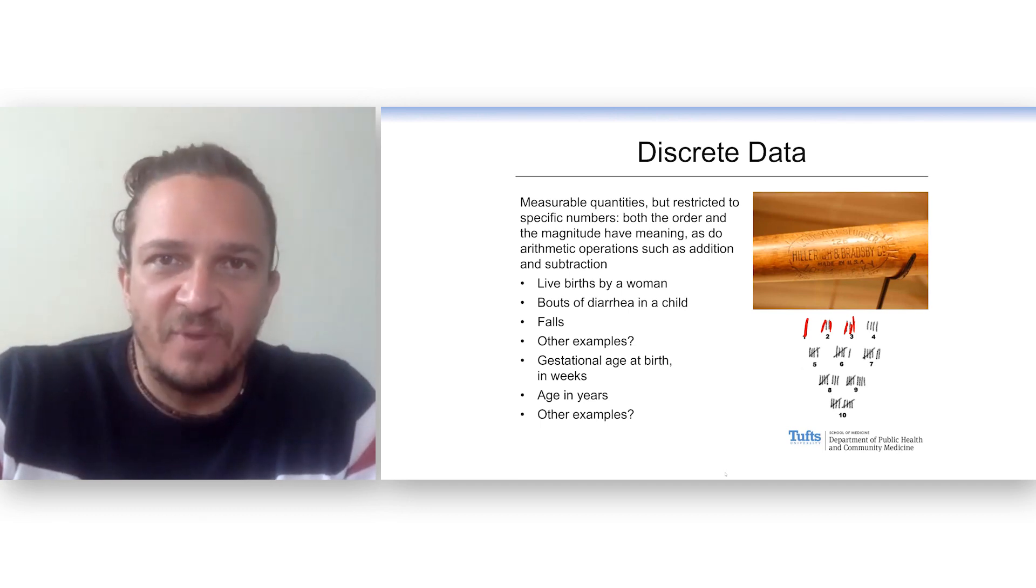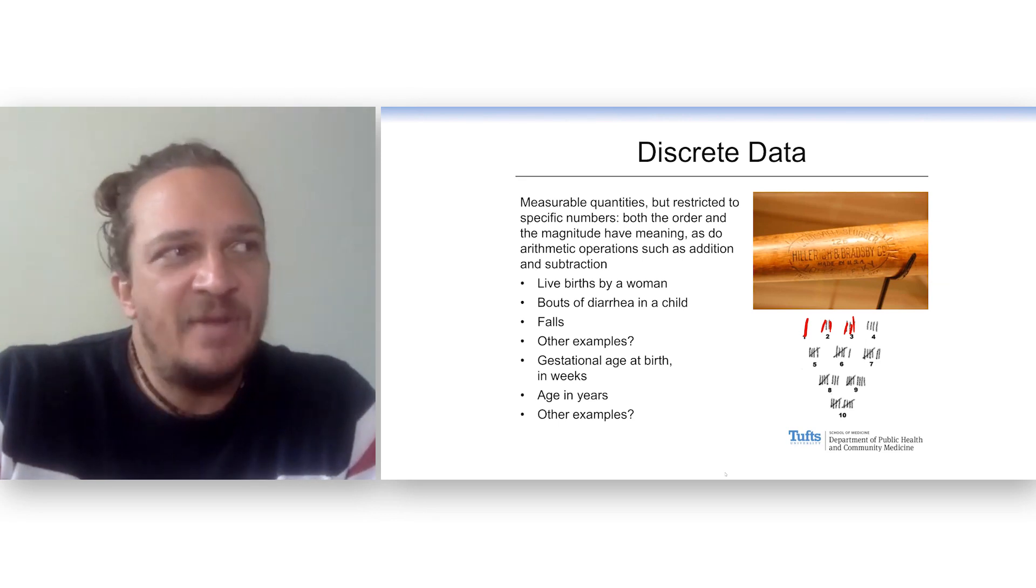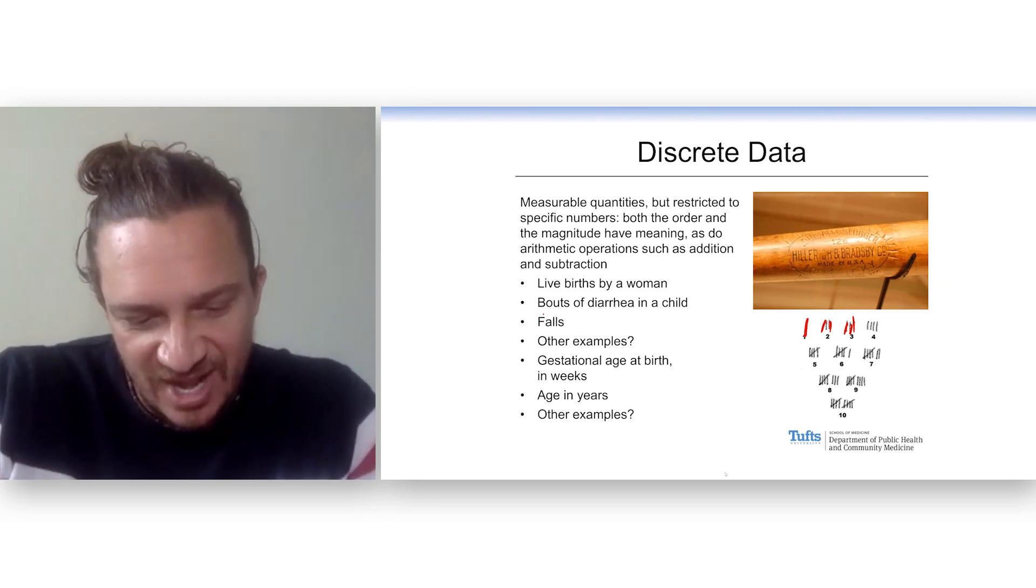Such as the number of live births by a woman or the bouts of diarrhea in a child. We did a project at Tufts in Ecuador on vitamin A and zinc supplementation, and the main outcome was how many bouts of diarrhea did a child have? Well, what is half of a bout of diarrhea or a quarter of a bout of diarrhea? There's no such thing. So these things are all measured in counts.